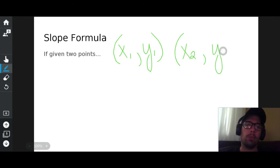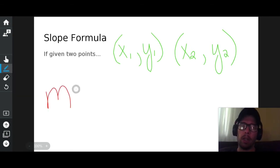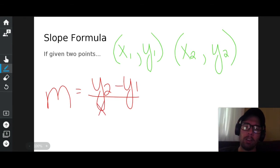I take those points and I plug them into this formula right here: y sub 2 minus y sub 1 over x sub 2 minus x sub 1. This is called the slope formula. Very, very, very important formula.